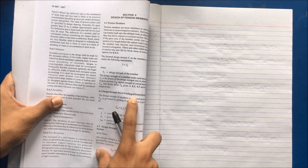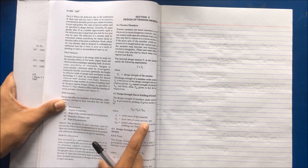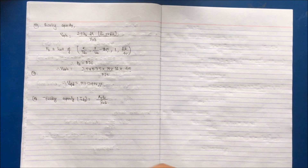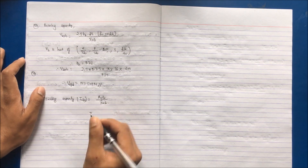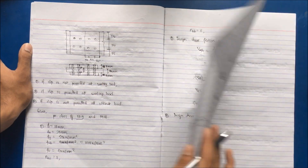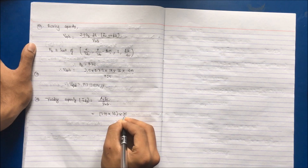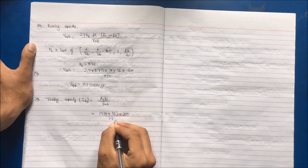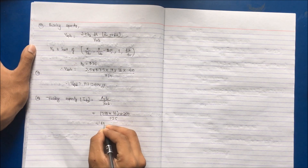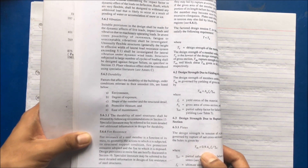Yielding of gross section: TD = AG × FY / γm0. FY is the yield stress, AG is the gross area, and γm0 is the partial safety factor for failure. The gross area AG = 210 mm × 16 mm (plate dimensions). So TD = 210 × 16 × 250 / 1.25 = 800 kN.